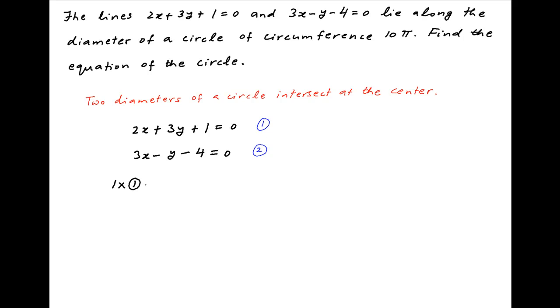Adding three times the second equation to one times the first equation, we get on the left hand side 2 plus 9 times x plus 3 minus 3 times y plus 1 minus 12 equals 0.